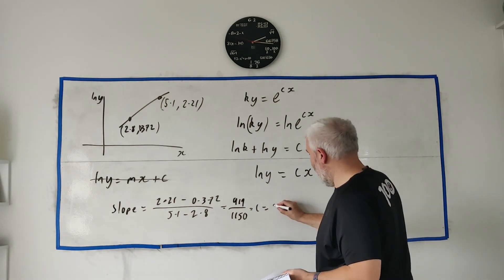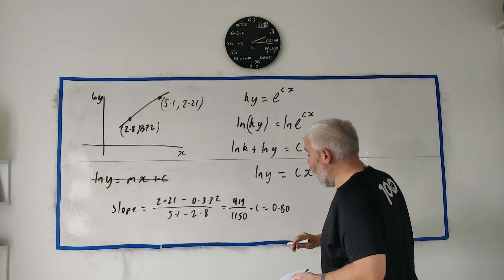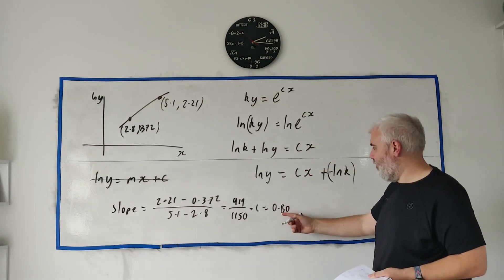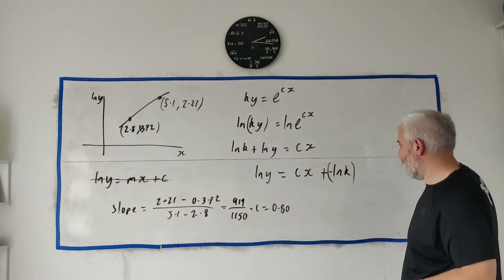They wanted c to two significant figures so I have that as 0.80—I think it was 0.7999 or something like that. Okay, so that's part of our answer, c. We just still need to get k, so how do we do that?